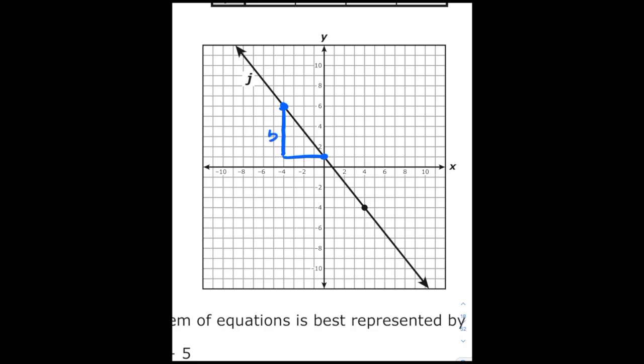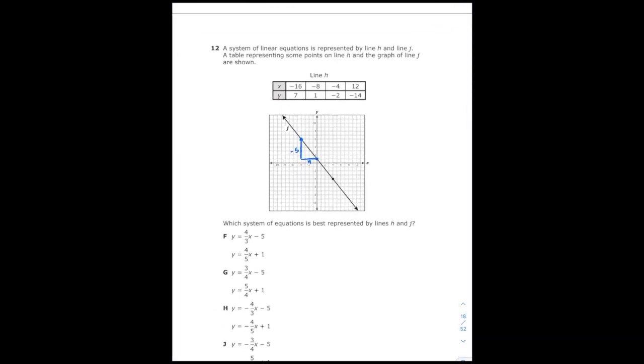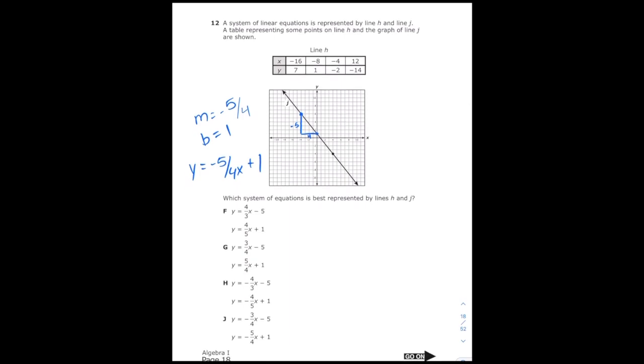I draw my right triangle and then I label the sides with five and four. And since the side with five is going down, that's going to be a negative five. So my slope is negative five over four. And then obviously the y-intercept is positive one. So that means my equation is y equals negative five over four x plus one. And if I look at my answer choices, only letter J has that equation. So that's our correct answer.